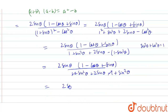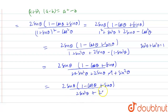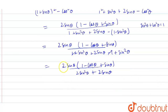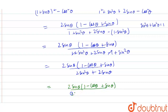So we will get 2 sin theta into 1 minus cos theta plus sin theta divided by 2 sin squared theta plus 2 sin theta. We take 2 sin theta common from the denominator, so we will get sin theta plus 1. The 2 sin theta cancels, so we will get 1 minus cos theta plus sin theta divided by 1 plus sin theta.